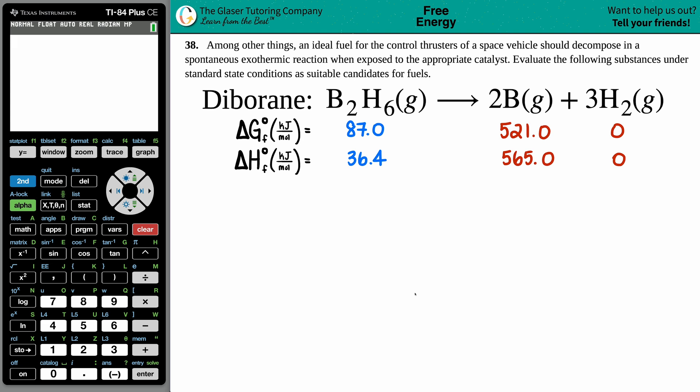Number 38: Among other things, an ideal fuel for the control thrusters of a space vehicle should decompose in a spontaneous exothermic reaction when exposed to the appropriate catalyst. Evaluate the following substances under standard state conditions as suitable candidates for fuels.